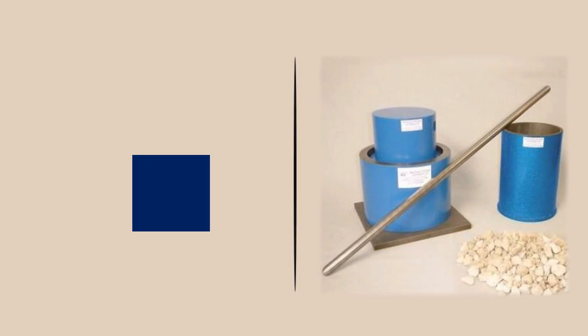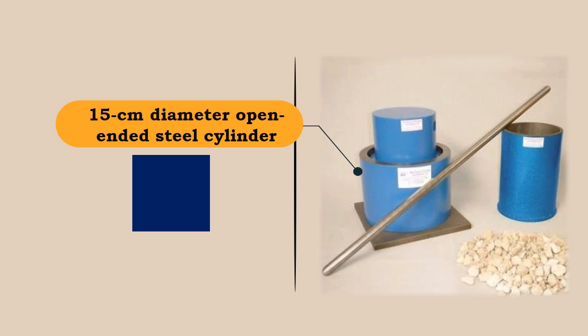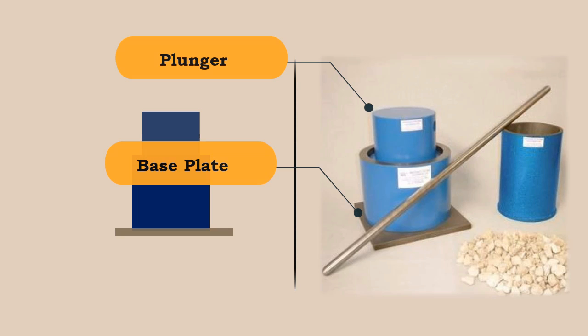The apparatus required for this test are: A 15 cm diameter open ended steel cylinder with plunger and base plate as per the dimensions confirming the Indian Standard Code IS 2386 Part 4 1963.